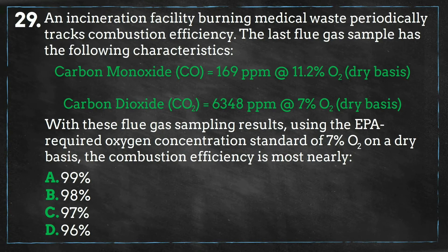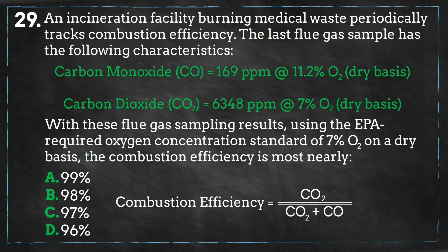This problem shows that we have some measurements of carbon dioxide and carbon monoxide, albeit the carbon monoxide concentration is much smaller. This shows that we do not have complete combustion coming out of the exhaust stack. So to find the combustion efficiency, we will take the concentration of carbon dioxide divided by the sum of the carbon dioxide and carbon monoxide concentrations.